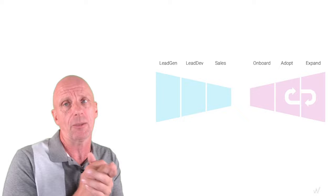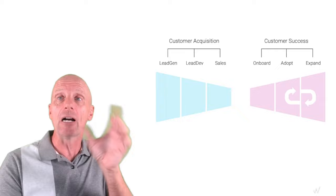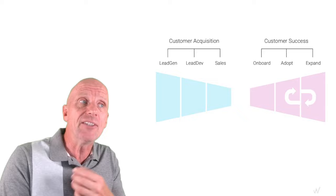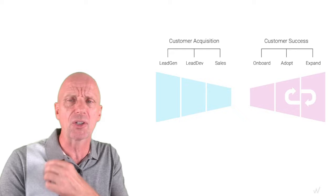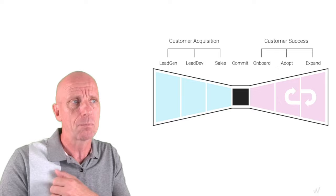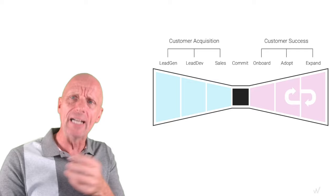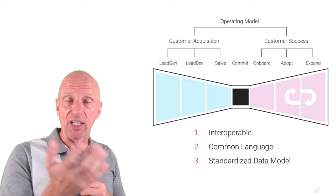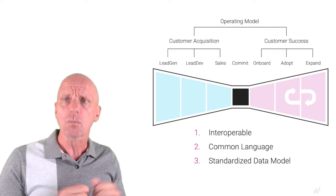So how are we going to establish that? I'm going to take all these pieces, bring them down to a baseline, and create an operating model. I'm going to structure all these functions and align them with each other to create interoperability. We're not thinking in departments like marketing, sales, and customer success — we're thinking in functions: lead generation, lead development, and sales are functions of customer acquisition. Onboarding, adoption, and expansion are functions of customer success. The operating model creates interoperability between departments — can marketing's lead generation interface with sales functions, interface with onboarding? And it creates a common language.